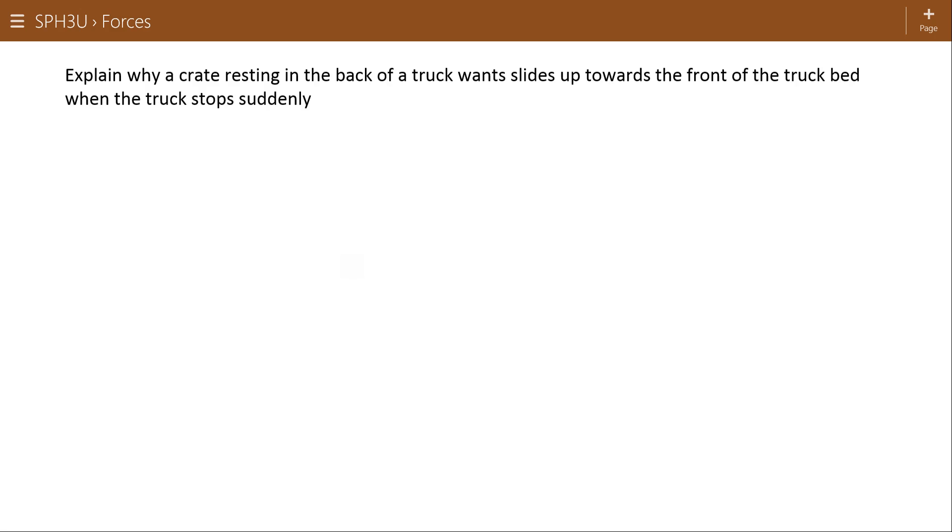Explain why a crate resting in the back of a truck wants to slide up towards the front of the truck bed when the truck stops suddenly. Here's our truck. I'm just going to keep them really simple. Here's our crate. And so the car is moving along, and then when it comes to a sudden stop, so it's going to accelerate this way, this crate is going to slide this way.